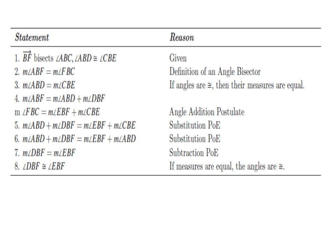Statement 3 is the understanding that if angles are said to be equal, that means their measurements are equal. So the measure of angle ABD equals the measure of angle CBE.